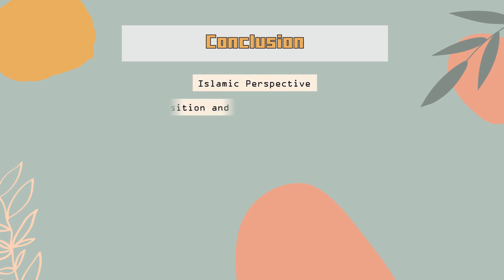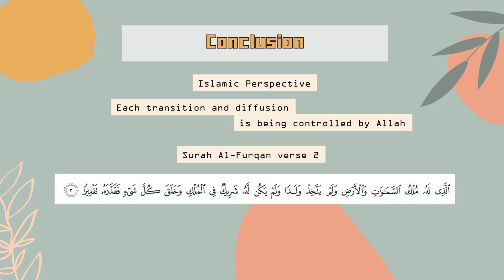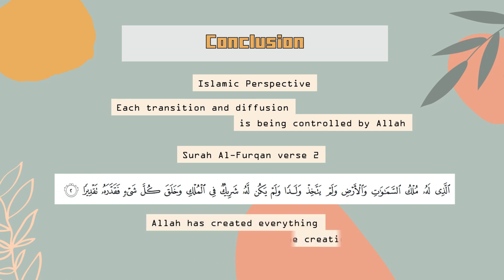From the Islamic perspective, each transition and diffusion is controlled by the Almighty Creator. As translated from Surah Al-Furqan verse 2: 'He to whom belongs the dominion of the heavens and the earth, and who has not taken a son, and has not had a partner in dominion, and has created each thing and determined it with precise determination.'